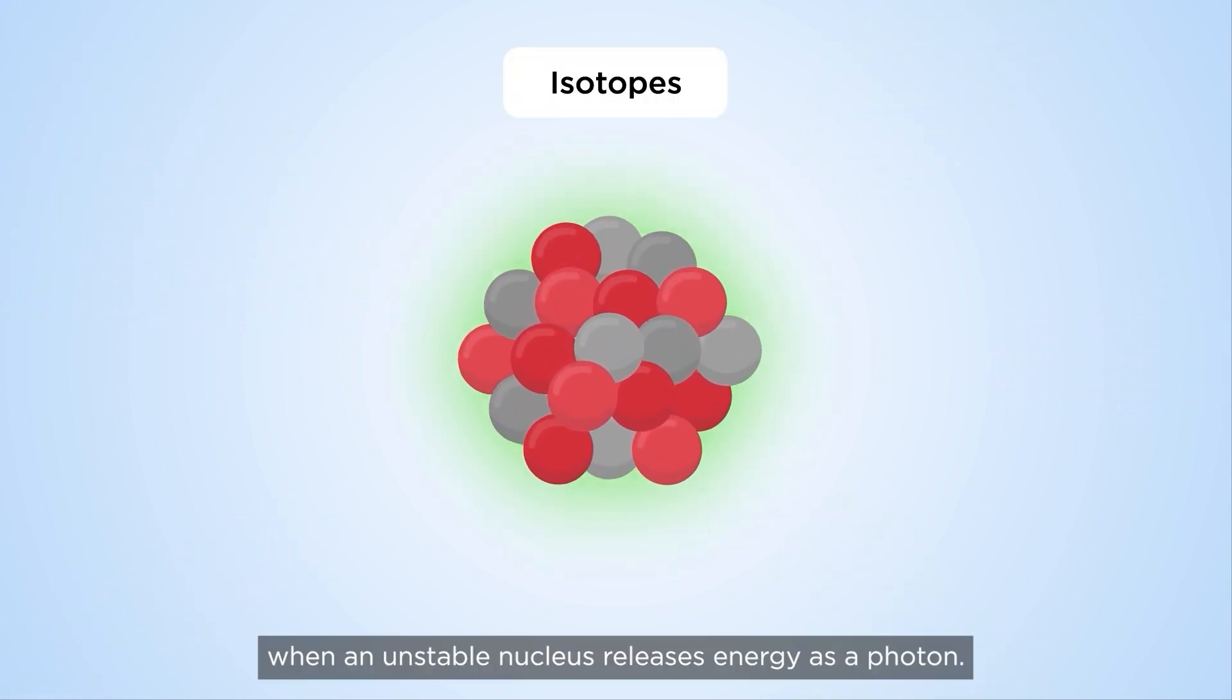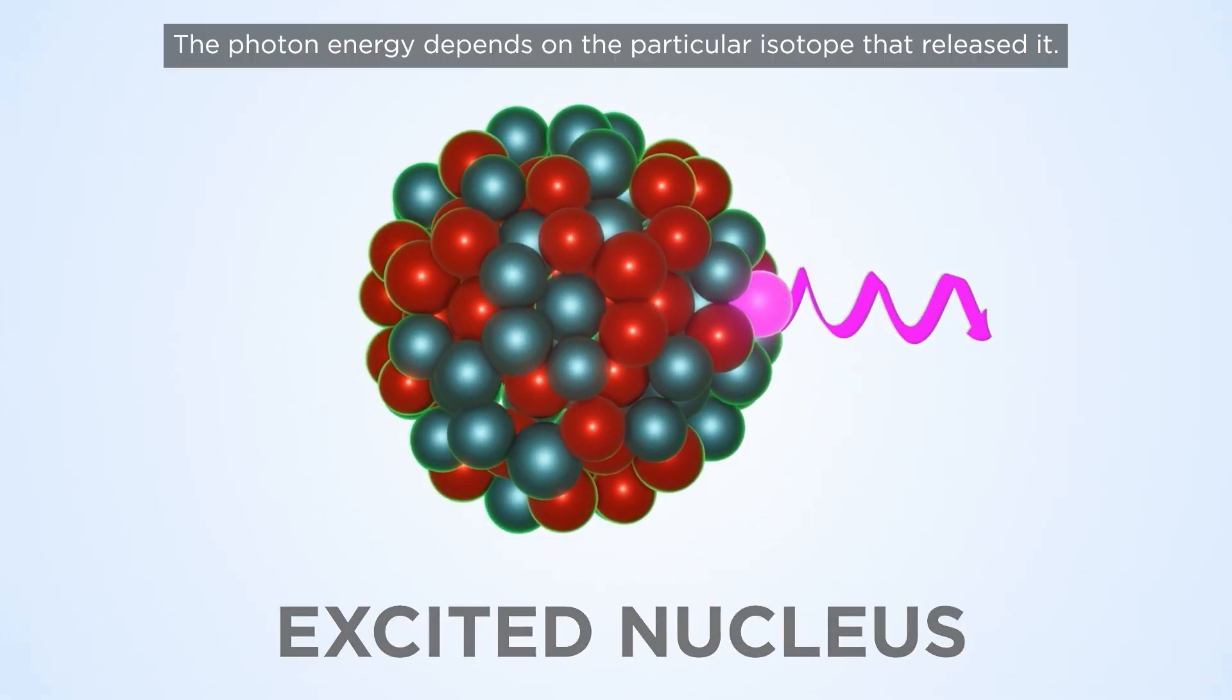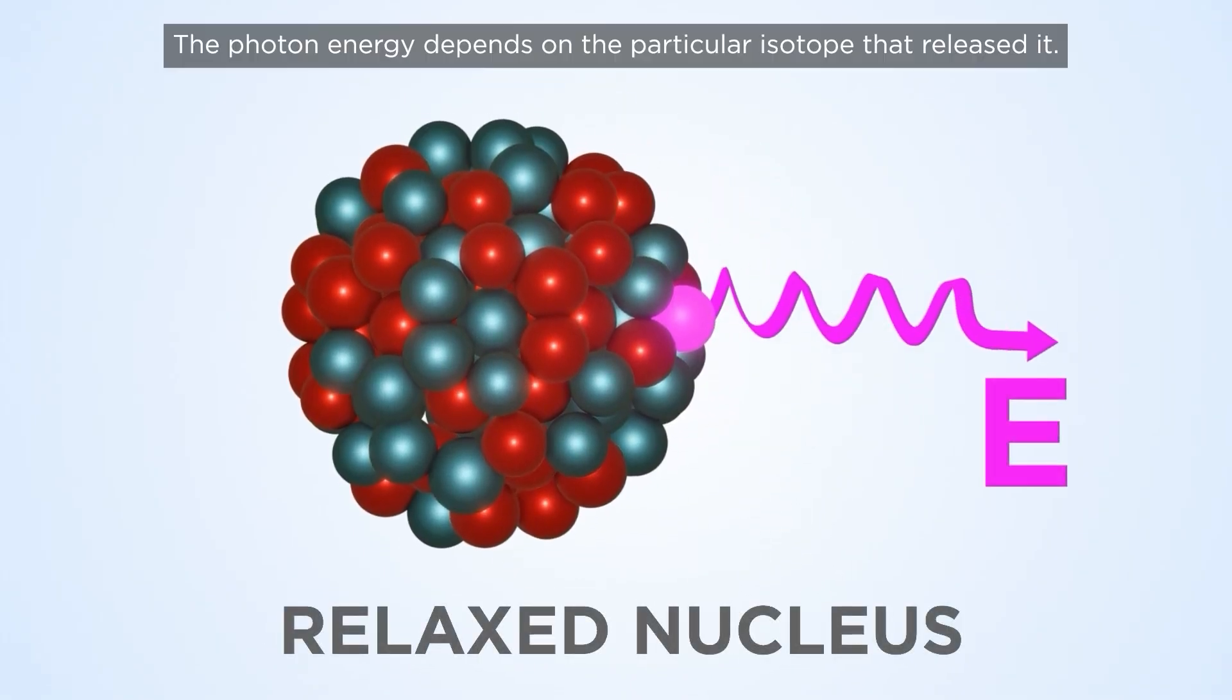Gamma radiation occurs when an unstable nucleus releases energy as a photon. The photon energy depends on the particular isotope that released it.